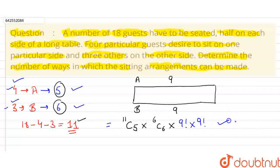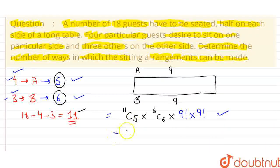So, this is the total arrangement, possible arrangement, number of ways in which sitting arrangement can be made. So, it is equal to 11C5, 6C6 is 1 only, into 9 factorial, into 9 factorial. This is our required answer.